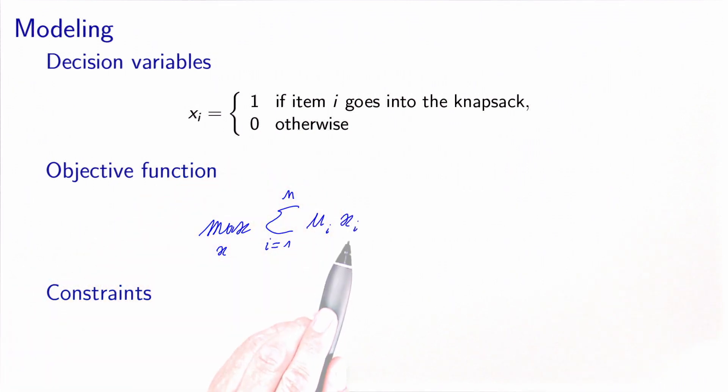So if xi is equal to one, the utility of i will contribute to the sum. If xi is equal to zero, it will not contribute. Note that it's a linear function of the decision variables.